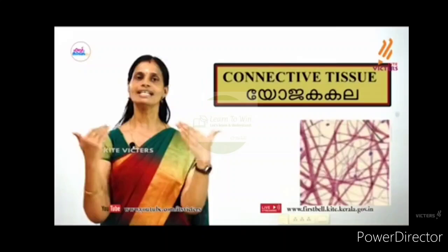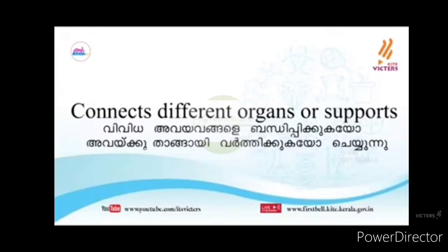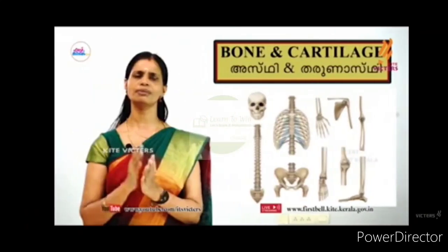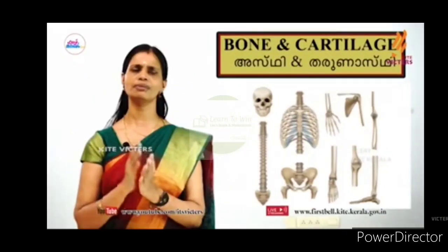Connective tissue connects different organs and provides support. The types of connective tissue are bone, cartilage, blood, and fibrous tissue. Bone provides protection, support, and shape to the body — for example, the skull protects the brain.